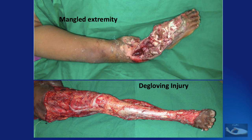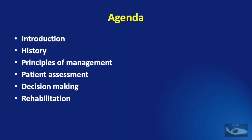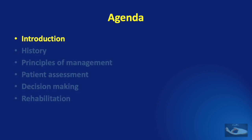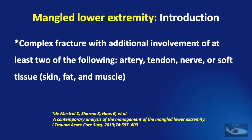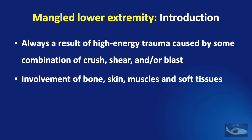In this video, we shall see all about the mangled lower extremity under the headings of introduction, history, principles of management, patient assessment, decision making, and rehabilitation. The mangled lower extremity refers to a complex fracture with additional involvement of at least two of the following: artery, tendon, nerve, or soft tissue — which includes skin, fat, and muscle. It is usually a result of high energy trauma caused by some combination of crush, shear, and blast.